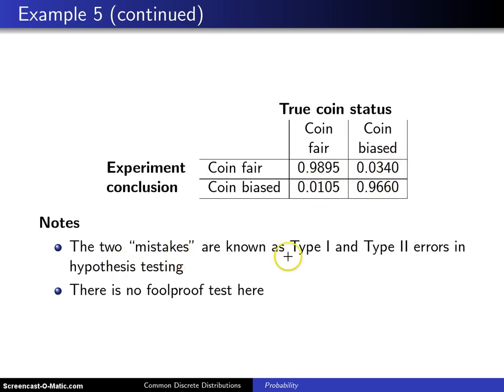And notice those two errors in hypothesis testing are a Type I error. And the probability of a Type I error is 0.0105. And the probability of a Type II error is 0.0340.